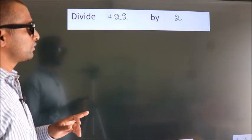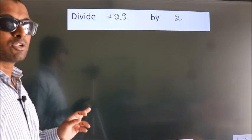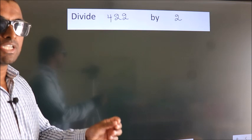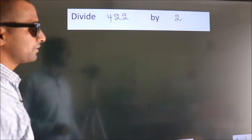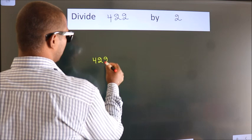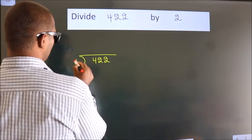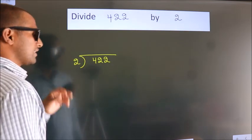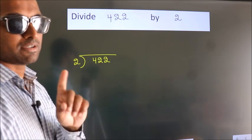Divide 422 by 2. To do this division, we should frame it in this way. 422 here, 2 here. This is your step 1.